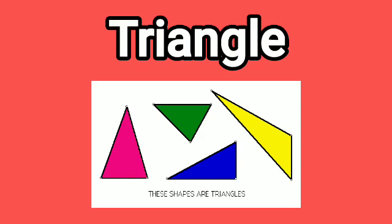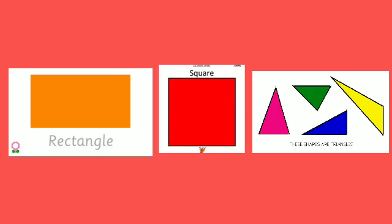Triangles — a triangle has three sides and three edges. The sum of the lengths of two sides of a triangle is always greater than the length of the third side.